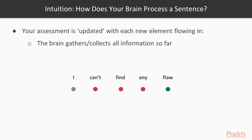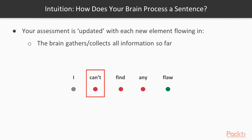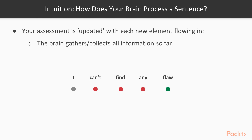Let's start with the first word which is 'I' — this is a neutral sentiment. Next word: 'can't' — that's a negative sentiment, and together these two words give a negative sentiment overall. Third word: 'find' — neutral by itself, but the phrase 'I can't find' is still negative. Fourth word: 'any' — again neutral, so overall the phrase 'I can't find any' still carries a negative sentiment.